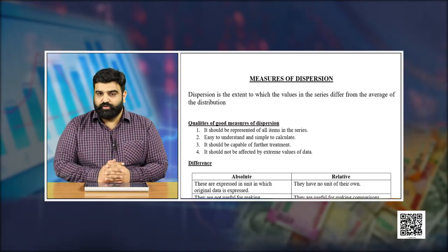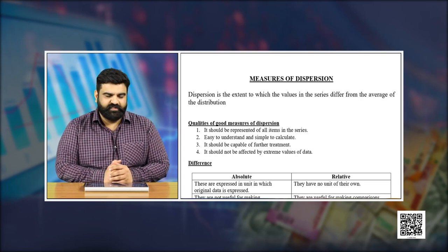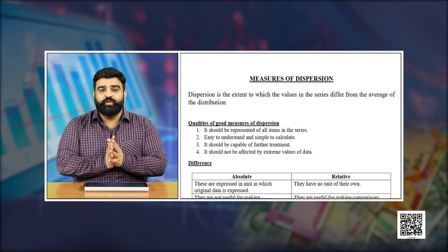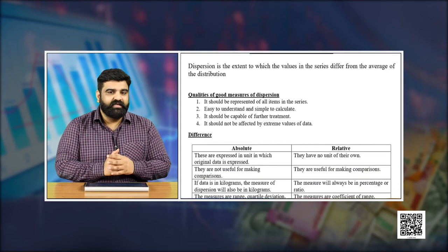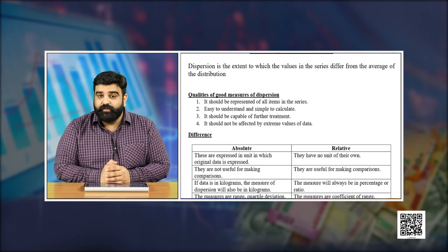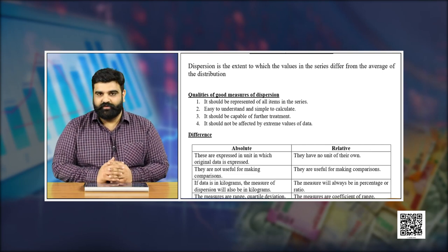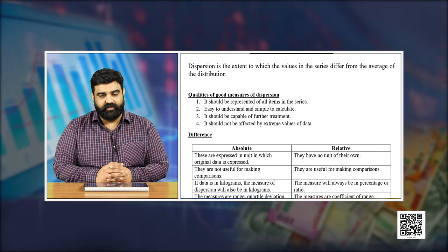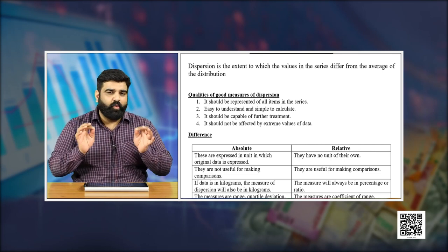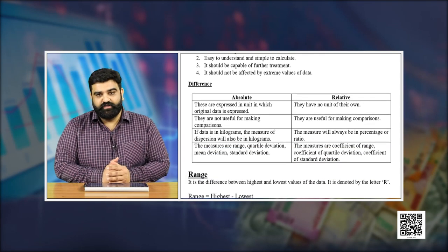What are the qualities of a good measure of dispersion? First, it should be representative of all the items in the series — a measure of dispersion should include all items. Second, it should be easy to understand and easy to calculate. Third, it should be capable of further treatment, meaning it can be used in further analysis or interpretations. Fourth, it should not be affected by or dependent solely on the extreme values of the data.